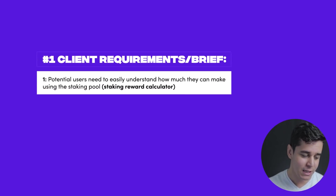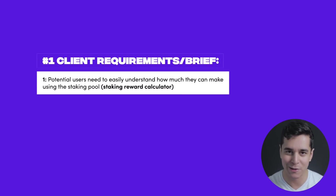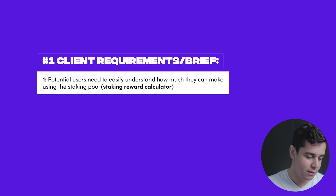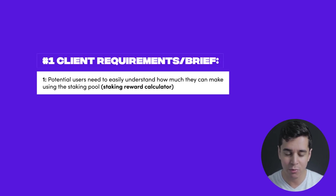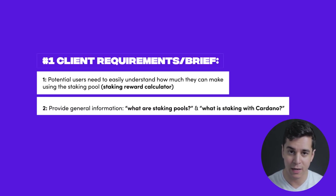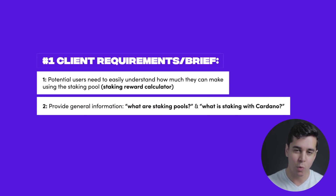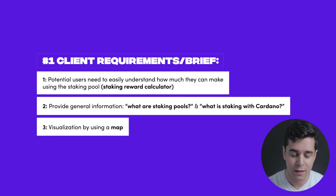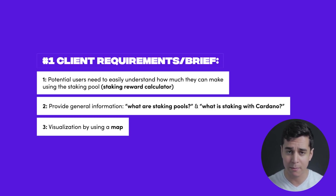They want three things. They want potential users or visitors to the website to be able to easily understand how much they can make with the staking pool using a staking reward calculator. So that's number one. Number two, they wanted the website to provide general information to users on what staking pools actually are and what is staking with Cardano. And then thirdly, they wanted a map, sort of a visualization using a map, to show that blockchain is decentralized. Those are the requirements that Cardano put forth.